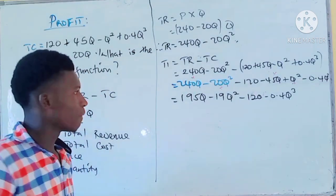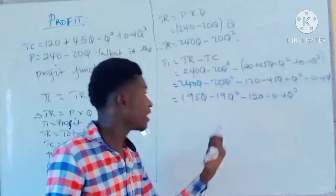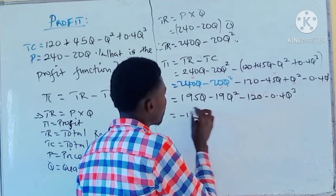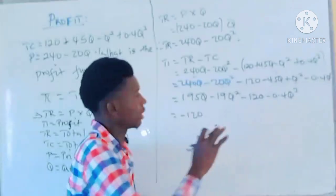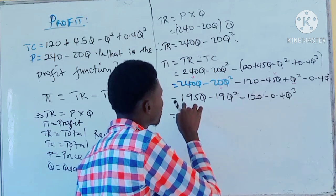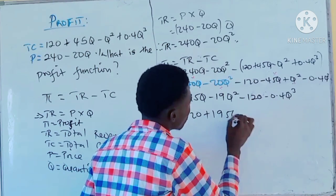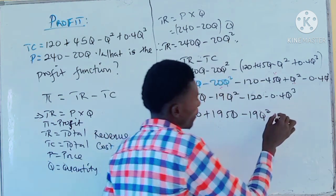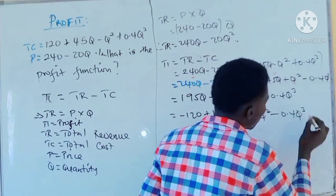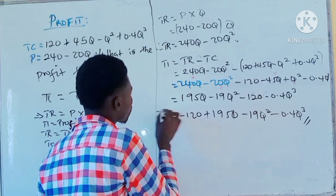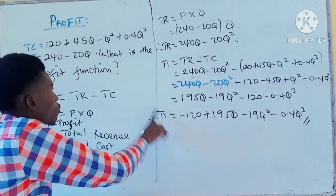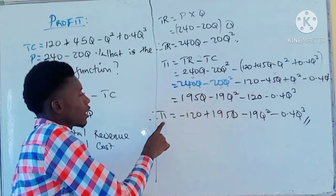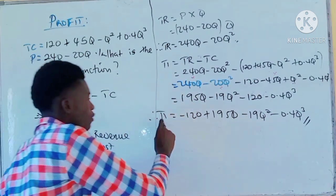Now we arrange the terms in order. Starting with the constant: minus 120. Then the first power term: plus 195Q. Then the second power: minus 19Q squared. Then the third power: minus 0.4Q cubed. This is your profit function — profit expressed in terms of Q. It is also known as the expression of the profit.